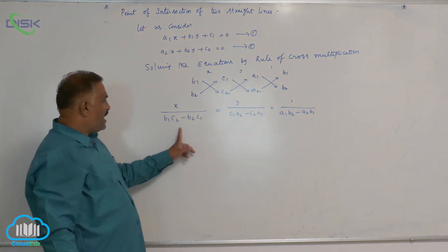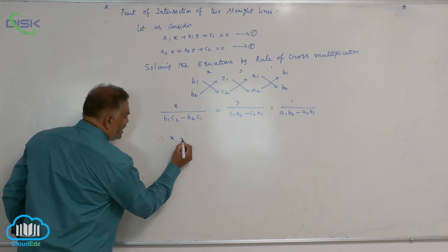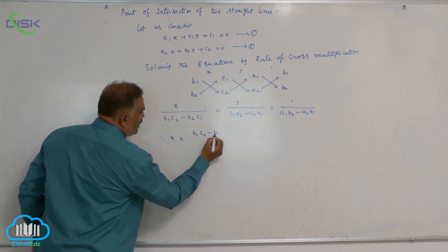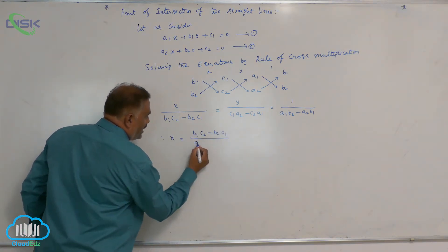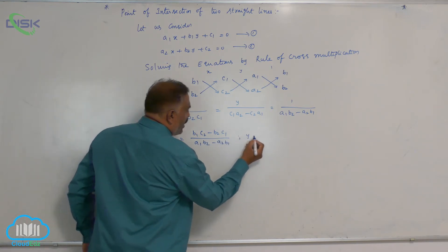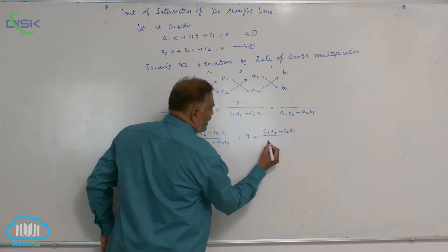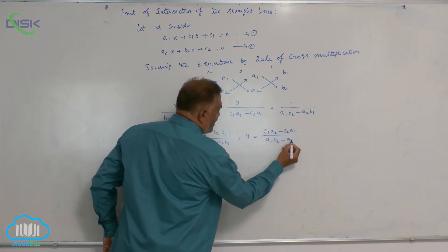Take first and last. Therefore, we will get x equals b1c2 minus b2c1 by a1b2 minus a2b1, and y equals c1a2 minus c2a1 by a1b2 minus a2b1.